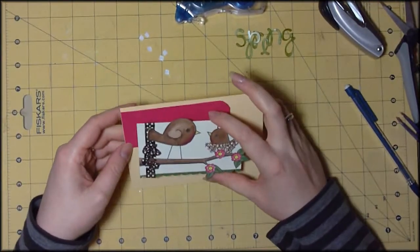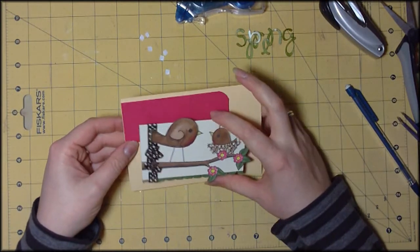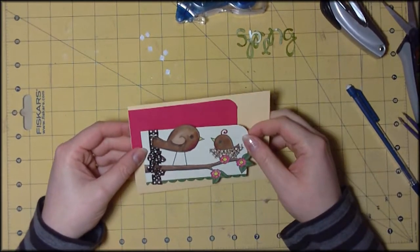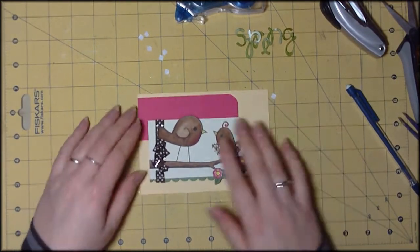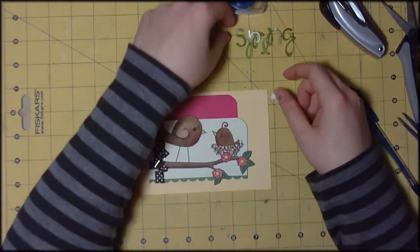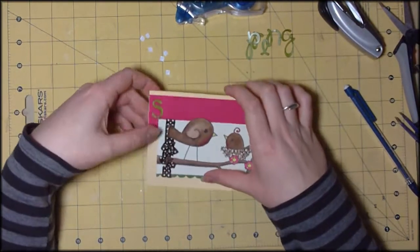I'm going to offset that slightly from the edge of the card, as you can see here. Then I can go ahead and add my letters again and this time I can actually press them down when I know I'm happy.